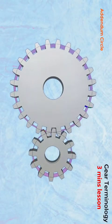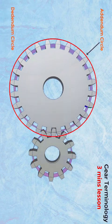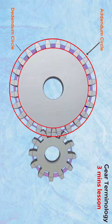Addendum circle. The circle drawn through the top of the teeth, concentric with the pitch circle, is called the addendum circle. Dedendum circle. The circle drawn through the bottom of the teeth is called the dedendum circle. It is also called the root circle.